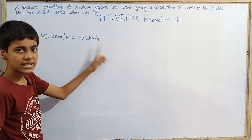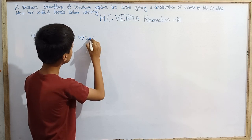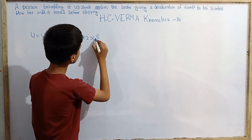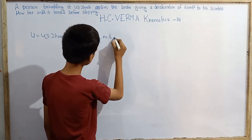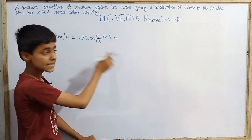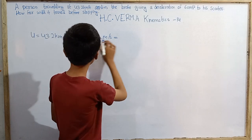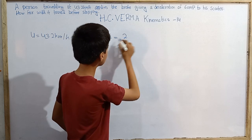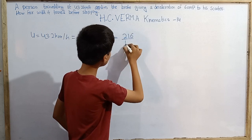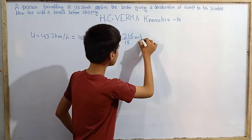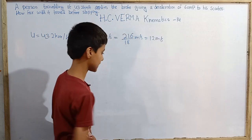Converting to SI units: 43.2 km/h × (5/18) = 216/18 = 12 meters per second. So the initial speed in SI units is 12 m per second.